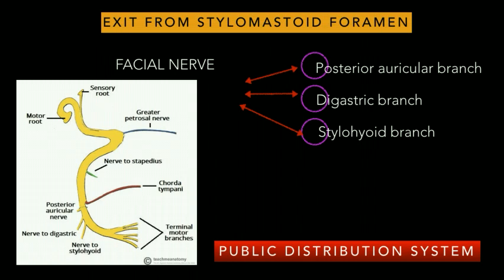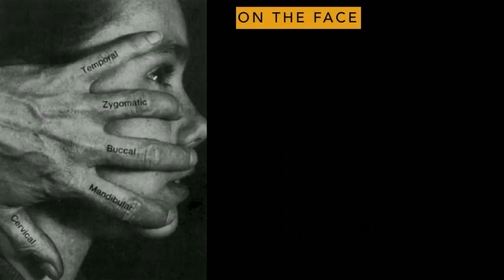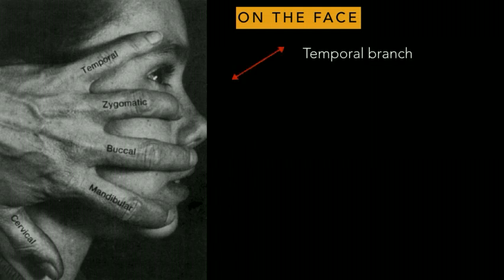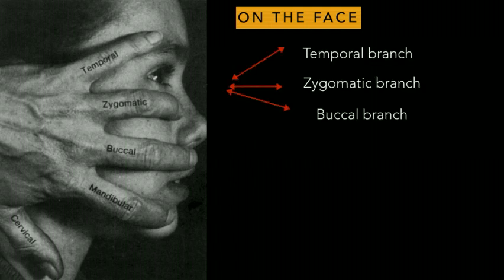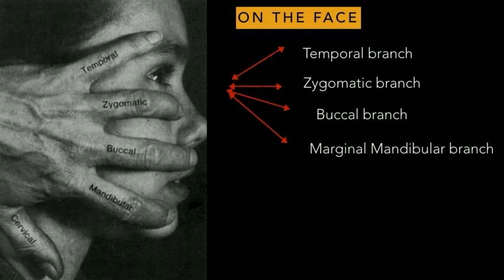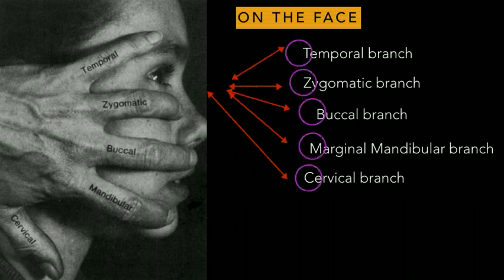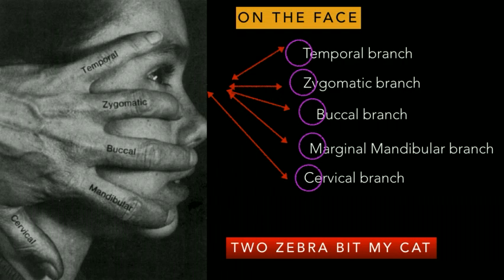The facial nerve then travels within the parotid gland to exit on the face, where it gives out five terminal branches: the temporal branch, zygomatic branch, buccal branch, marginal mandibular branch, and the cervical branch. Take T from temporal, Z from zygomatic, B from buccal, M from marginal mandibular, and C from cervical. The mnemonic to remember this is 'Two Zebras Bit My Cat.'